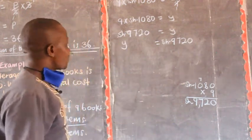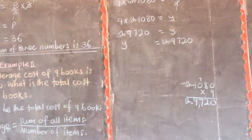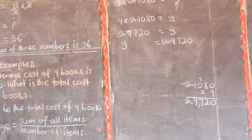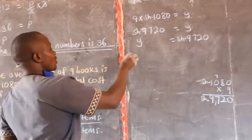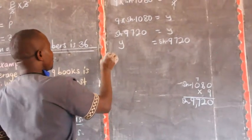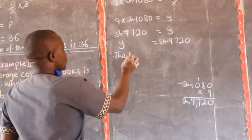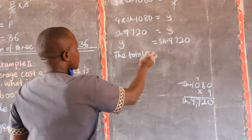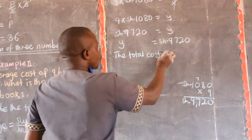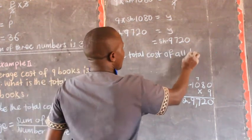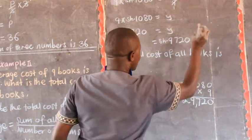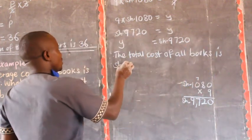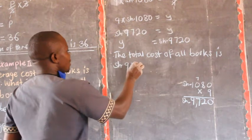Then we write our conclusion. The question is not asking for the value of Y alone, but for the total cost of all books. Therefore, the total cost of all books is 9,720 shillings.